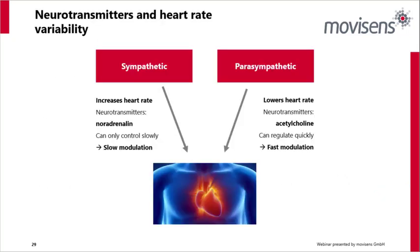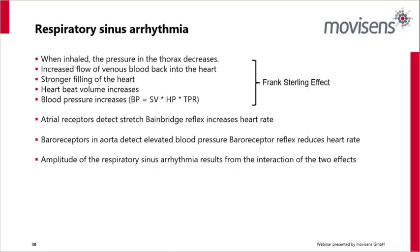In summary on neurotransmitters and heart rate variability: the sympathetic tends to increase heart rate using noradrenaline and can only modulate slowly. The parasympathetic lowers heart rate using acetylcholine and can regulate very quickly — it's a fast modulation. Respiration itself has an influence on heart rate: as we inhale, heart rate increases; as we exhale, it decreases. Respiratory sinus arrhythmia accounts for this element.